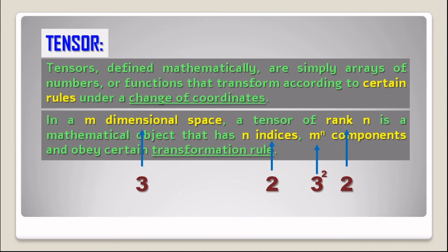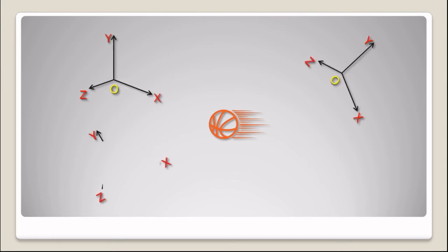If we shift the coordinate system, it will have no effect on the physical reality of the system — this is the key property of a tensor. Consider a moving ball: to define its motion we can use different coordinate systems. Our choice of coordinates should have no effect on physical reality, and none of these transformations will change the velocity of the ball.